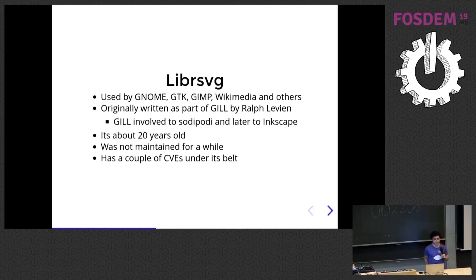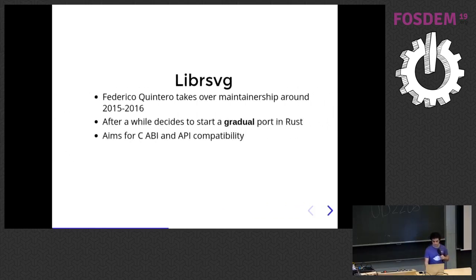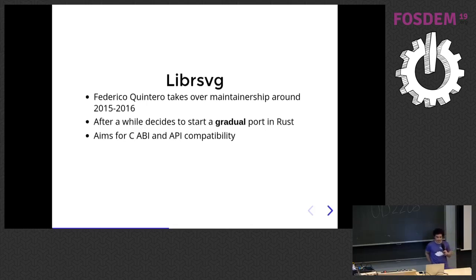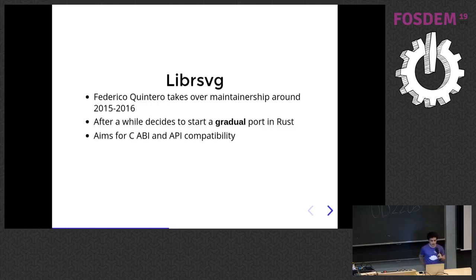LibrSVG was unmaintained for a while and had a couple of CVE issues. A couple of years ago, Federico Quintero, the current maintainer of LibrSVG, got fed up with the CVEs and decided to gradually port the library to Rust. It's not a rewrite — it's a gradual port. It aims for API and ABI compatibility, and it has achieved that to this day.